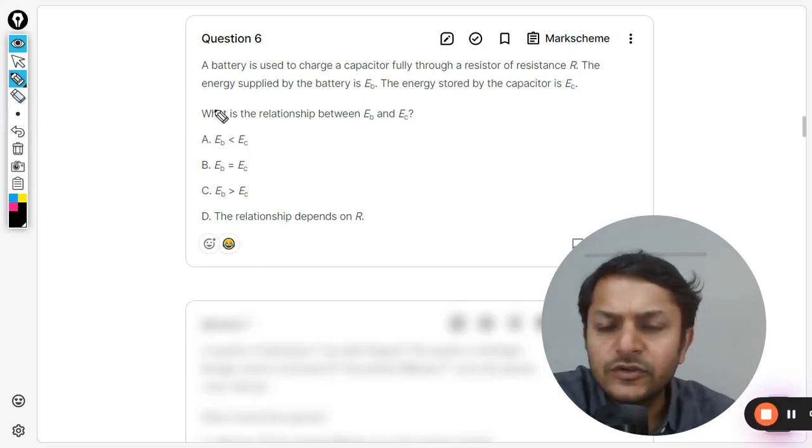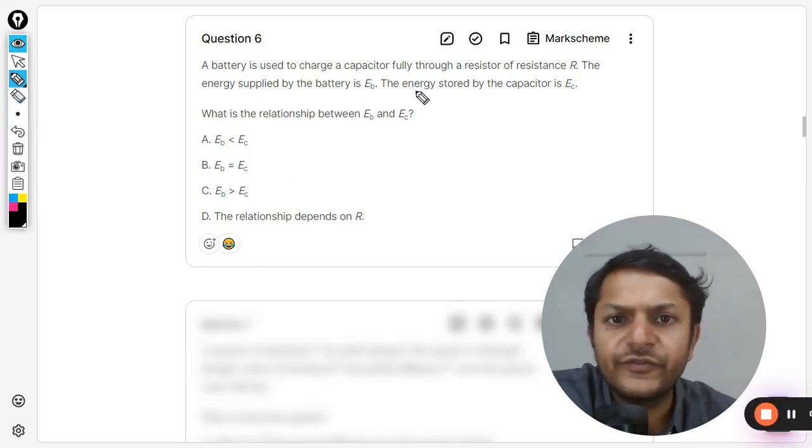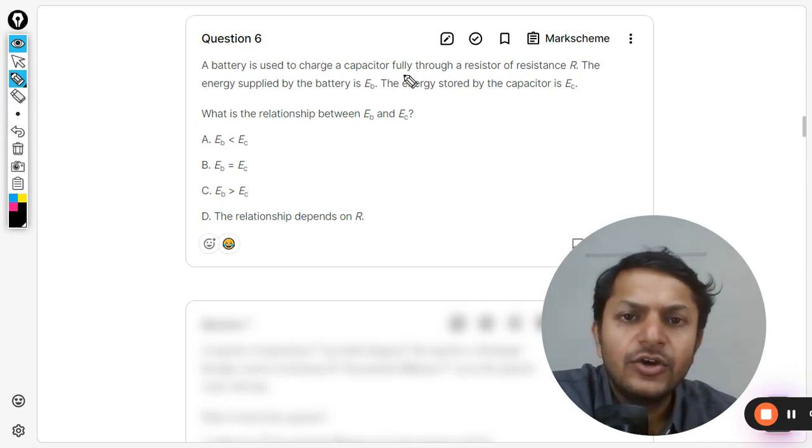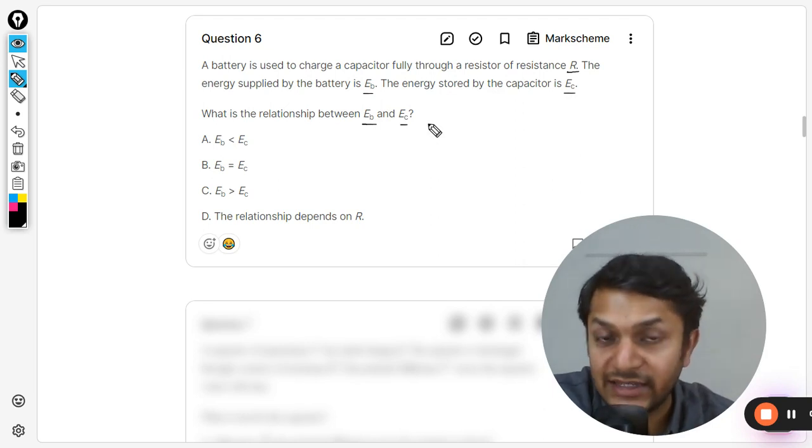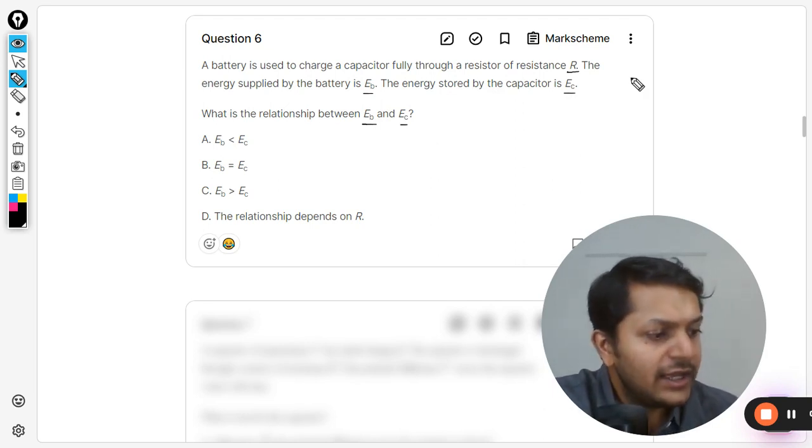Okay dear students, let us see what is there in this question. A battery is used to charge a capacitor fully through a resistor of resistance R. The energy supplied by the battery is Eb. The energy stored in the capacitor is Ec. What is the relationship between Eb and Ec?